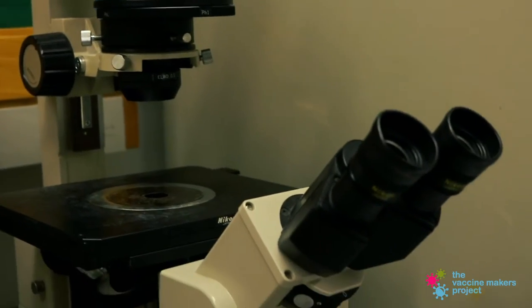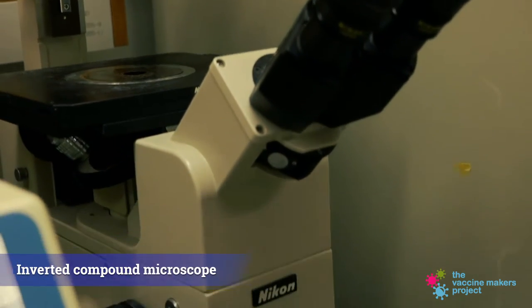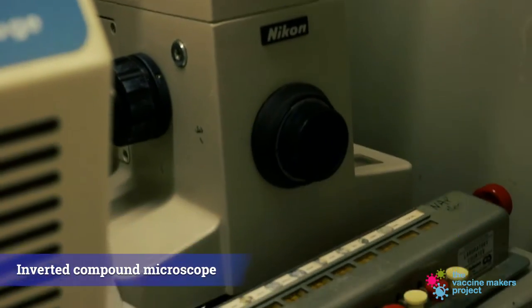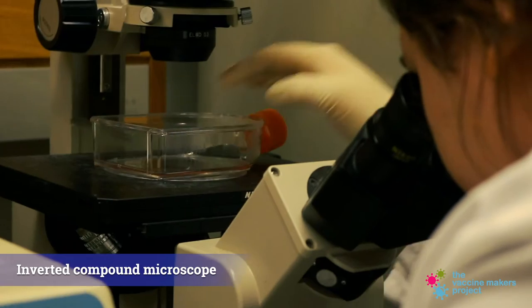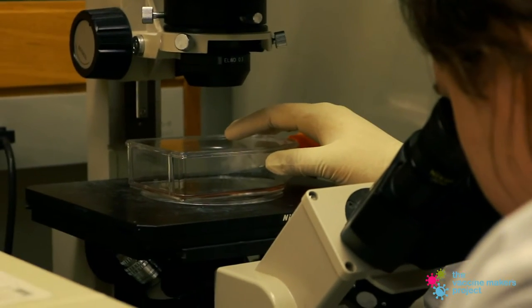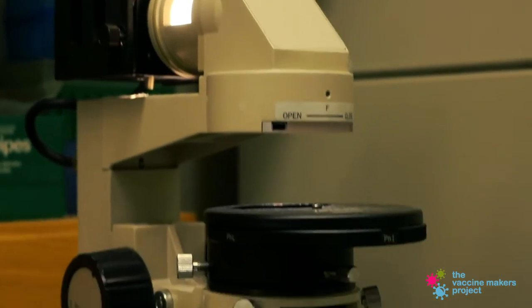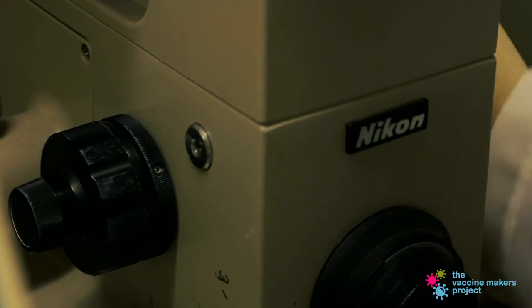I use an inverted compound microscope a lot, and so I couldn't fit an entire flask on a standard compound microscope. So they've created an inverted compound microscope where the light source is on the top and then the lenses that I rotate are actually on the bottom.